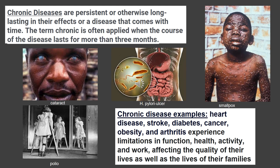Chronic diseases are persistent and long-lasting in their effects, or diseases that come on slowly over time. The term chronic is applied when the course of the disease lasts more than three months. For example, a cold or sinus infection can become chronic, turning into bronchitis or sinusitis. Examples of chronic diseases include heart disease, stroke, cancer, obesity, and arthritis — accumulative diseases that progress over time.